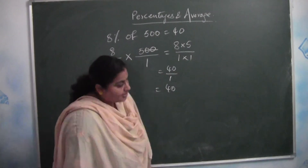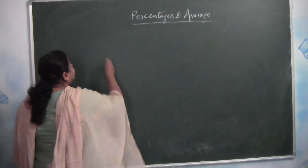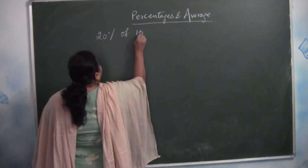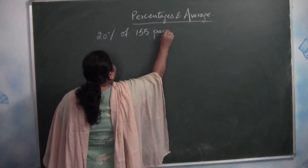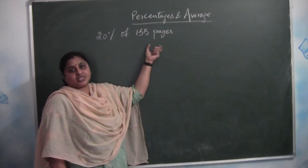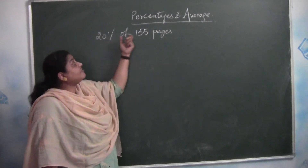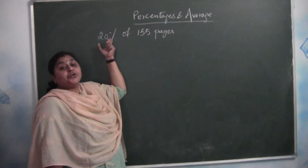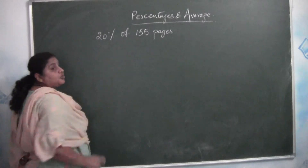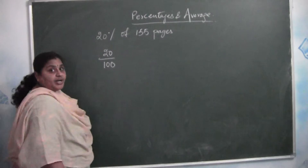Now let us take another example: 20 percent of 155 pages. It means out of a total of 155 pages, what is the actual quantity that is 20 percent? Now, 20 percent — how do we express it? 20 by 100. And 'of' means multiplication into 155.